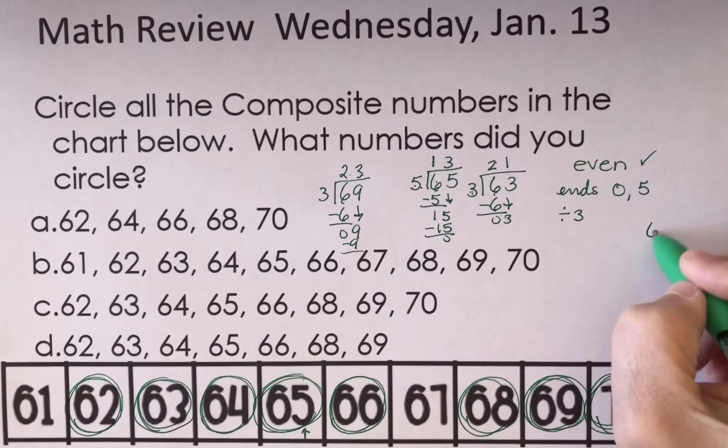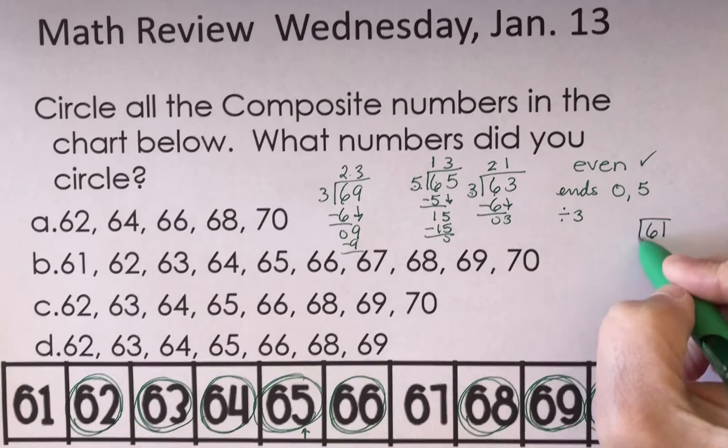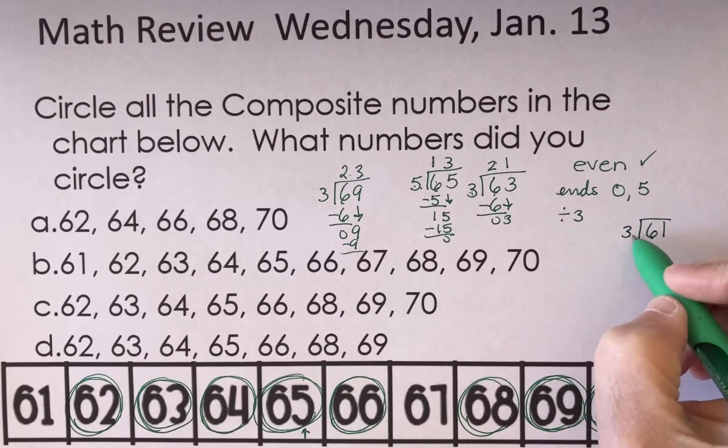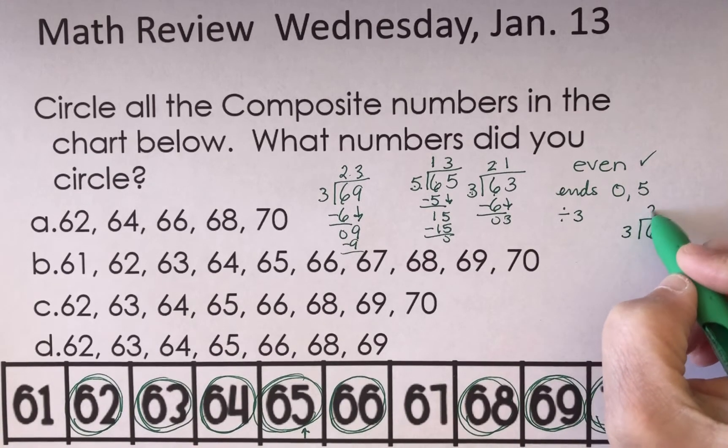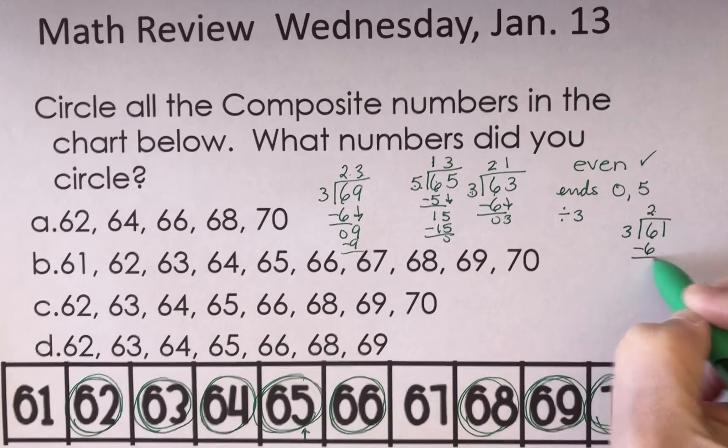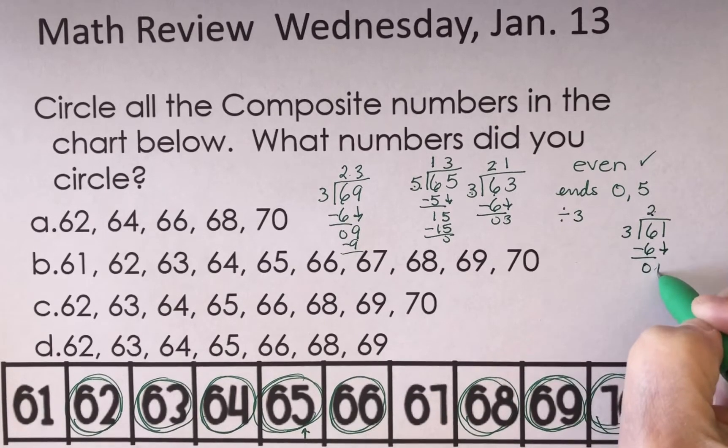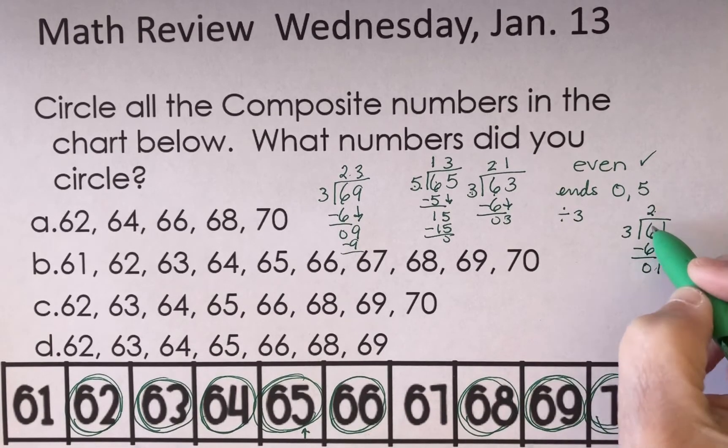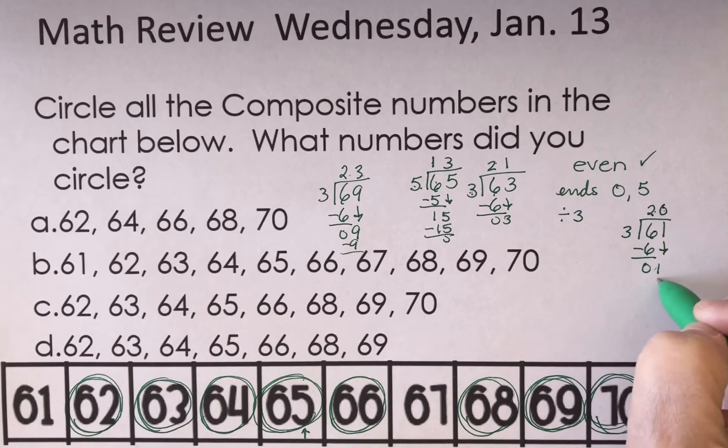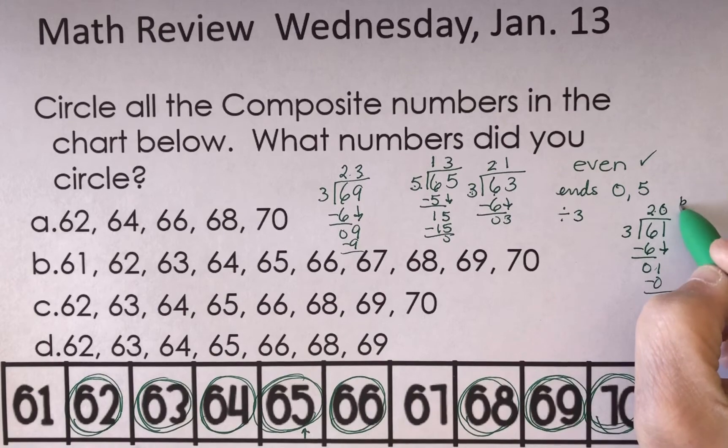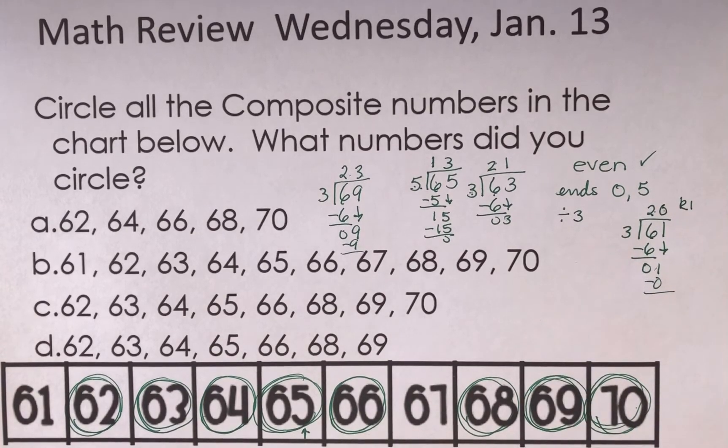All right, if I take 61 and I try to divide it by 3, 3 goes into 6 two times. That gives me a 6. I bring down the 1. There's a remainder, isn't it? If I put a 2 here, I'm going to have a remainder of 1. Can't have a remainder of 1 if it's going to be a composite number.